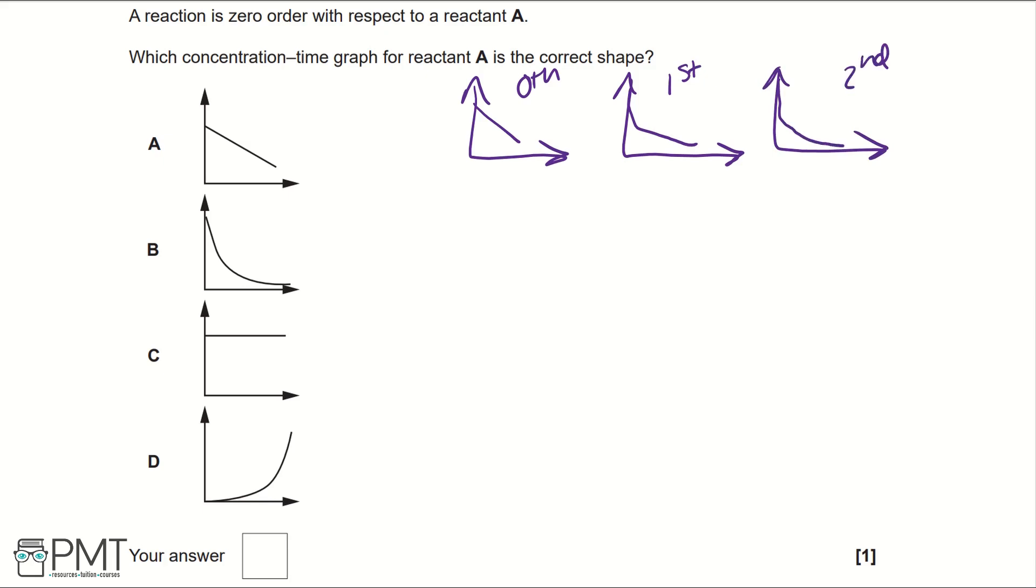So looking at our options to check that our answer is A. B matches first or second order, and so it cannot be B.